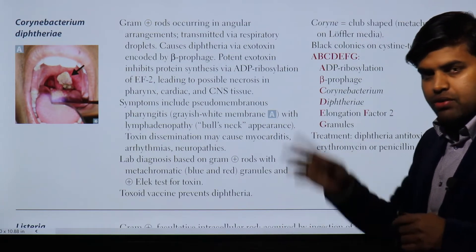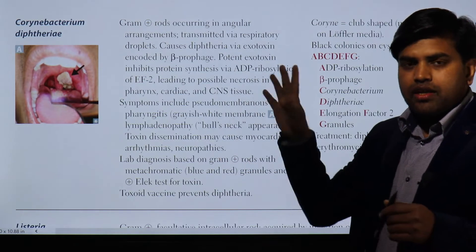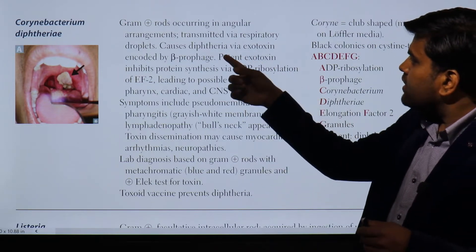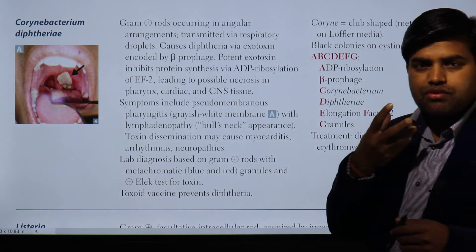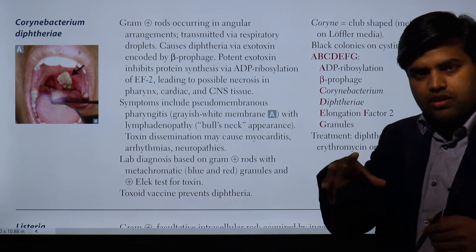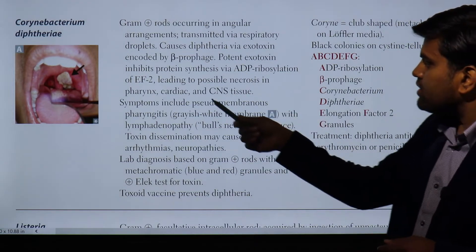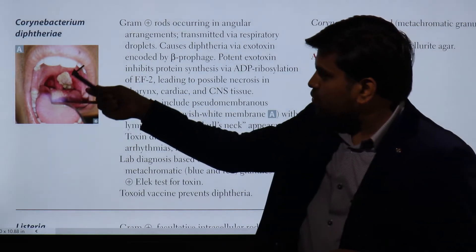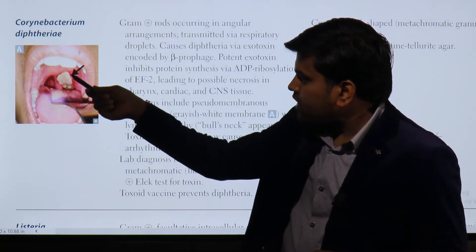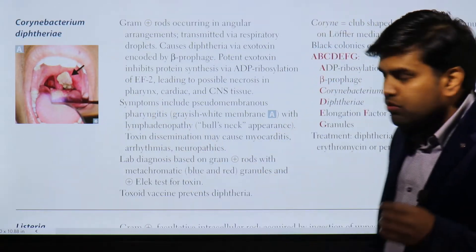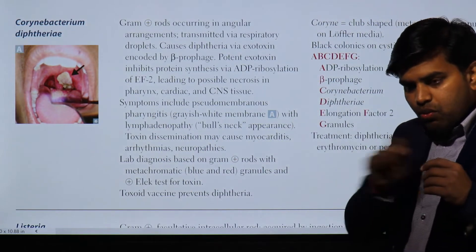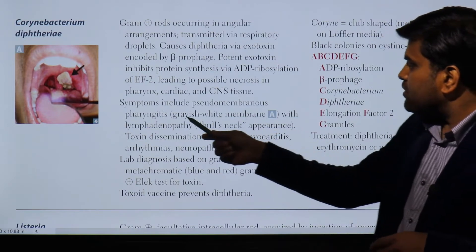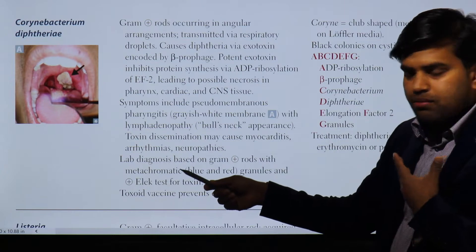Coming to the symptoms: the bacteria colonize in the throat and develop the pseudomembrane there, releasing the toxin which inhibits protein synthesis and causes necrosis of the pharynx, cardiac muscle, and nervous tissue. Symptoms include pseudomembranous pharyngitis - a grayish-white membrane in the throat. It is called a pseudomembrane because it is not a true membrane; when you try to tear it, there will be simultaneous bleeding. There is also lymphadenopathy - enlargement of the lymph nodes.